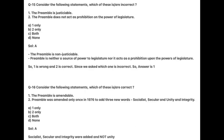Consider the following statements. Which of these are incorrect? One: The Preamble is justiciable. Two: The Preamble does not act as a prohibition on power of legislature. Answer is A. The Preamble is non-justiciable. The Preamble is neither a source of power to the legislature nor does it act as a prohibition upon the powers of the legislature. Statement one is wrong and statement two is correct, so the answer is 1.